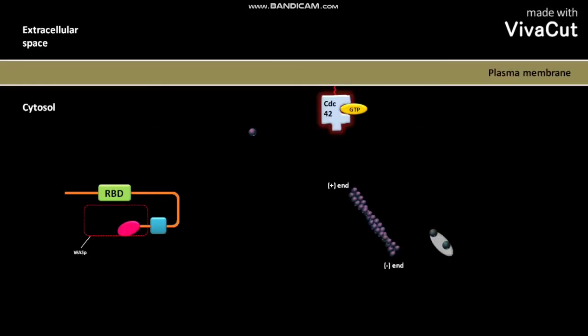The WASP protein is present in the cytosol of a cell in its folded inactive conformation. The WASP is inactive due to an intramolecular interaction. The WASP protein has an N-terminus and a C-terminus.